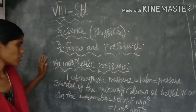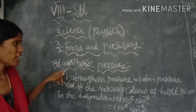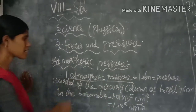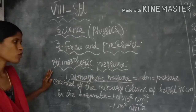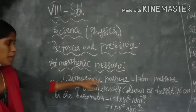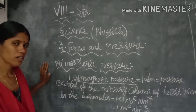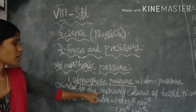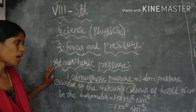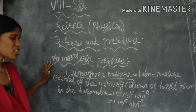One atmospheric pressure is shortly defined as 760 mm Hg, which refers to the atmospheric pressure. One atmospheric pressure is defined as the pressure exerted by a mercury column of height 76 centimeters in the barometer. The device used to measure pressure is called a barometer, and the liquid present inside the barometer is mercury.